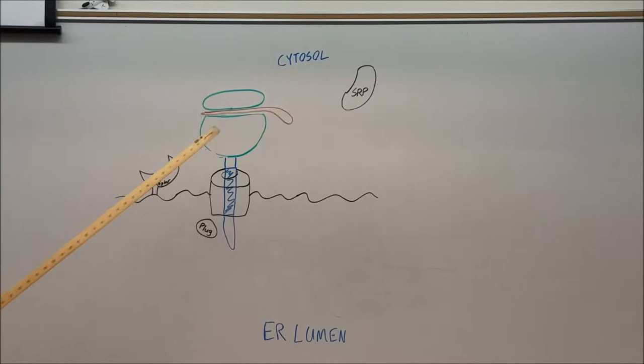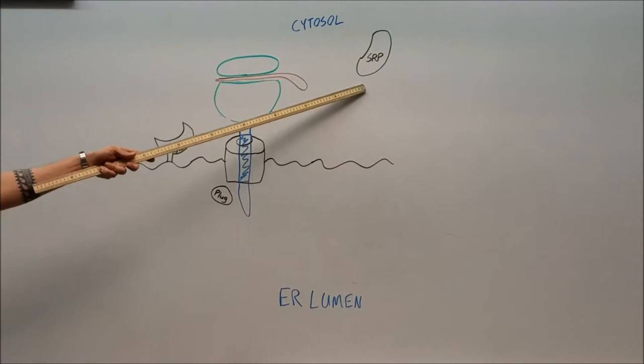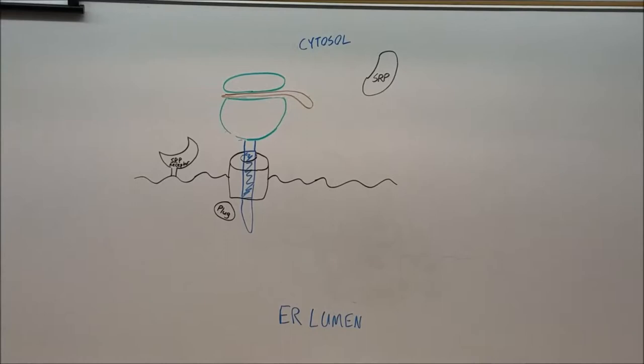Meanwhile, the SRP and the SRP receptor both dissociate from the ribosome. The SRP returns to the cytosol where it is reused, and the SRP receptor continues to move along the endoplasmic reticulum membrane, looking for SRP.